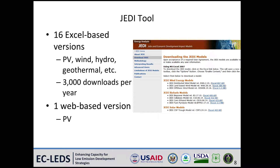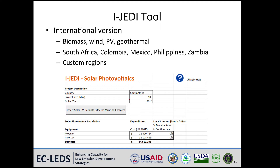There are 16 Excel-based models currently available encompassing renewable energy technologies such as wind, solar thermal and PV, geothermal, and hydro, as well as fossil fuel technologies. NREL has a web version of the tool designed to model solar PV plants. iJEDI is the international version of the JEDI tool. It estimates economic impacts from biomass, wind, solar PV, and geothermal plants.